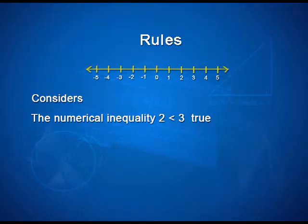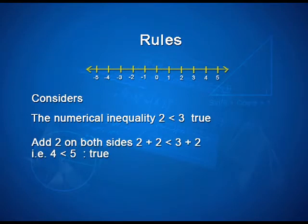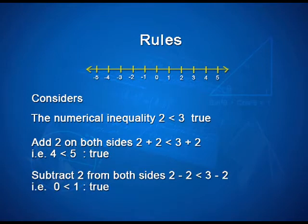Consider the numerical inequality 2 less than 3, which is obviously true. Add 2 on both sides: 2 plus 2 is less than 3 plus 2, that is 4 is less than 5, which is obviously true. Subtract 2 from both sides: 2 minus 2 is less than 3 minus 2, that is 0 is less than 1, which is again true.